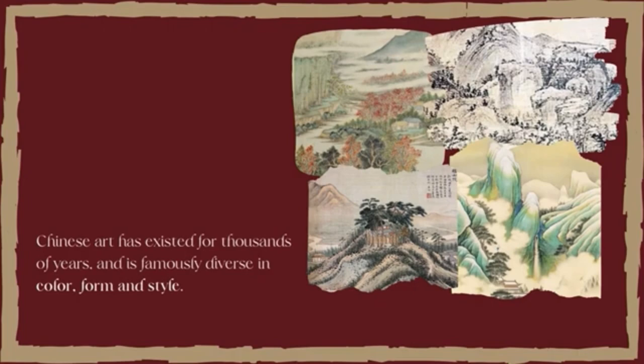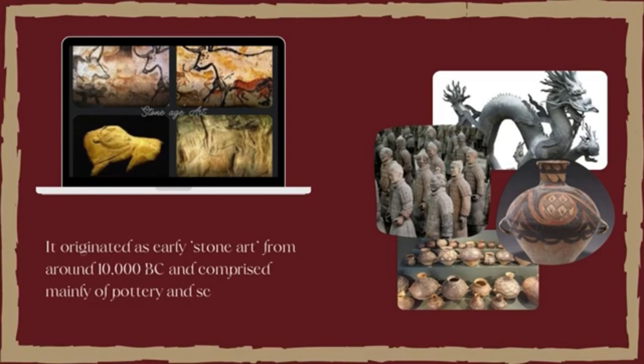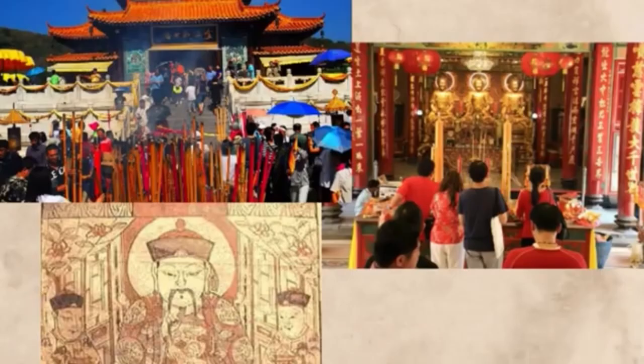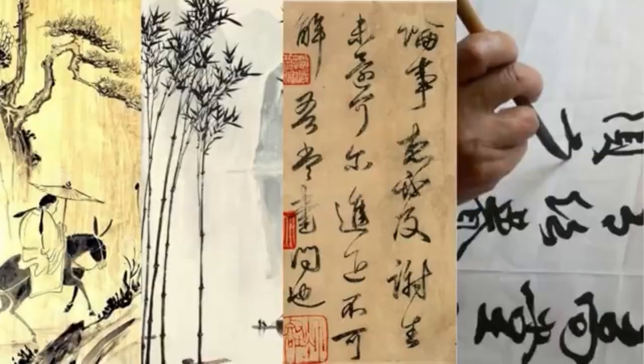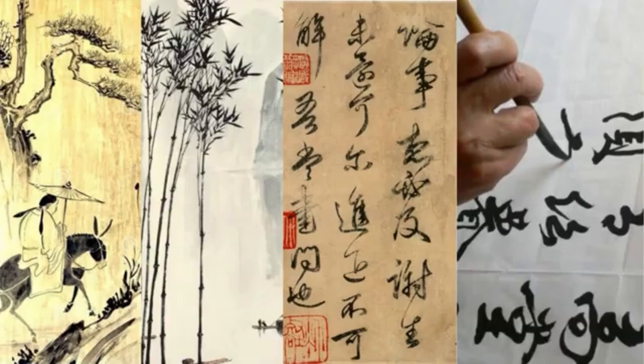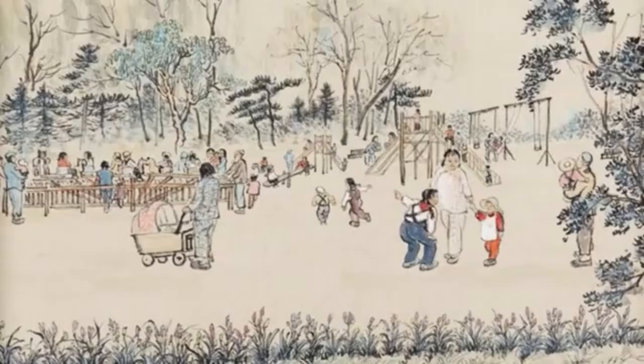Chinese art has existed for thousands of years and is famously diverse in color, form, and style. It originated as early stone art from around 10,000 BC, comprised mainly of pottery and sculpture. Its early beginnings were based on the religious and supernatural beliefs of Chinese settlers. Their paintings, quite abstract in form, involved the same techniques as Chinese calligraphy — a thin brush was dipped into color ink and minimalist brush strokes used to represent both people and landscapes.